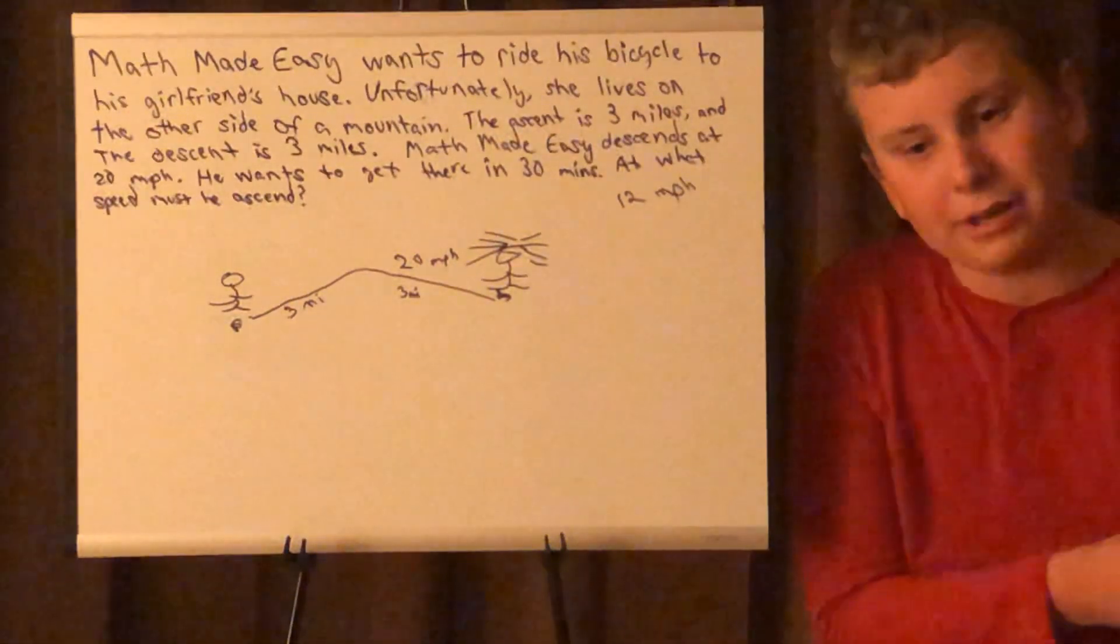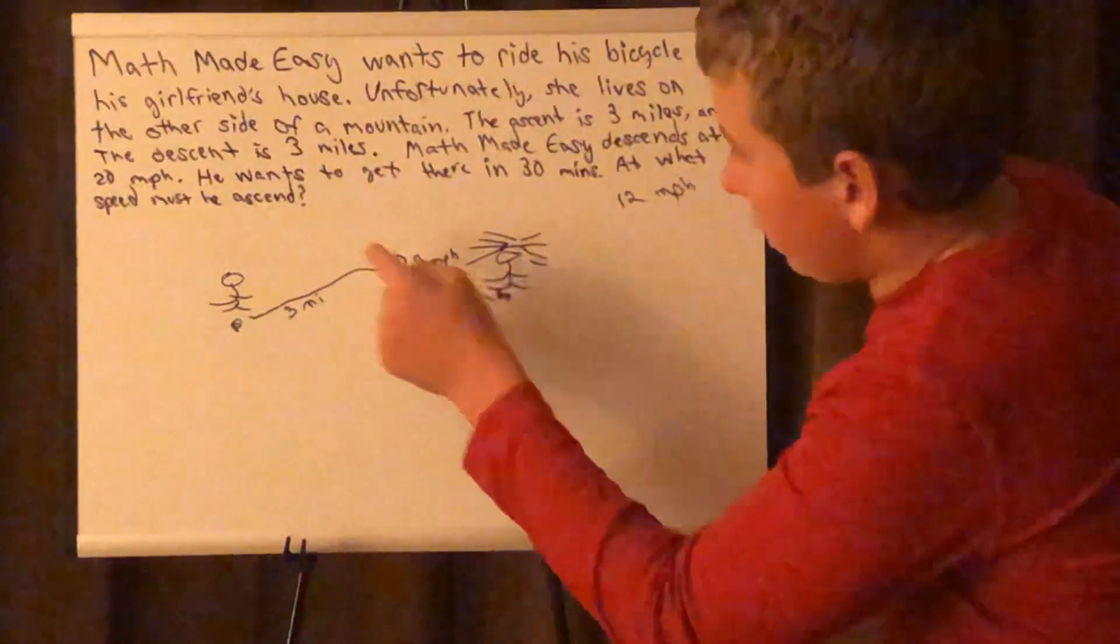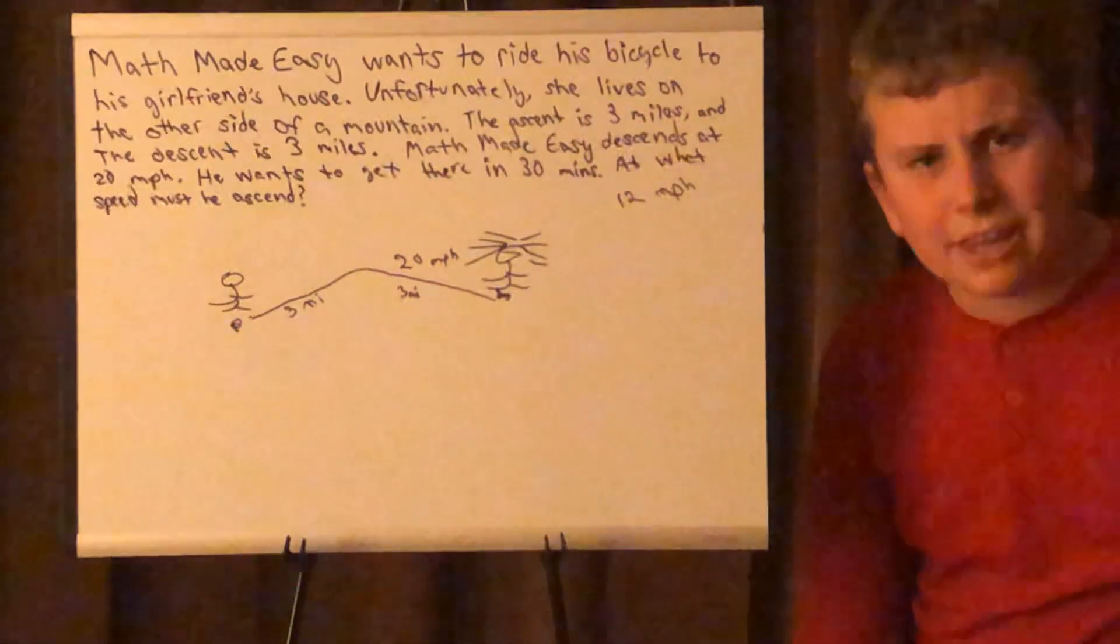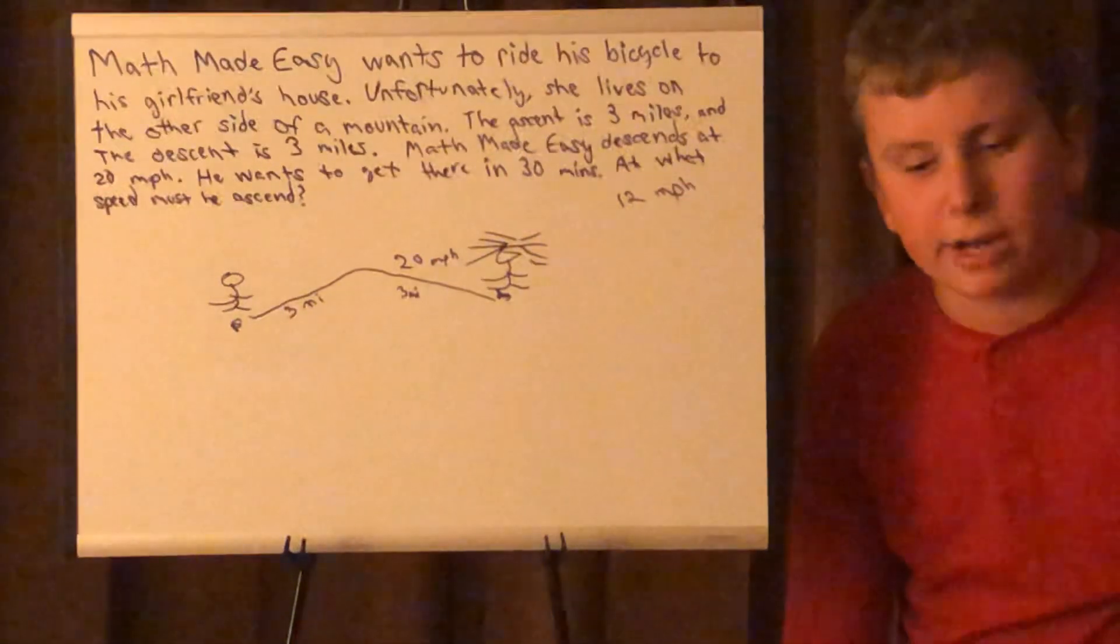So you might be tempted to just say, okay well the mean of 20 and 4 is going to be 12, so he must ascend at four miles per hour. But actually we're not going to take the arithmetic mean. We are going to take the geometric mean.